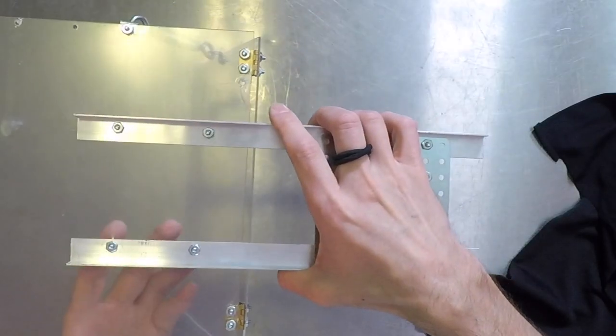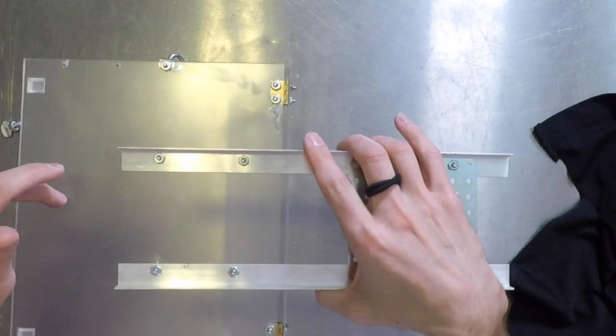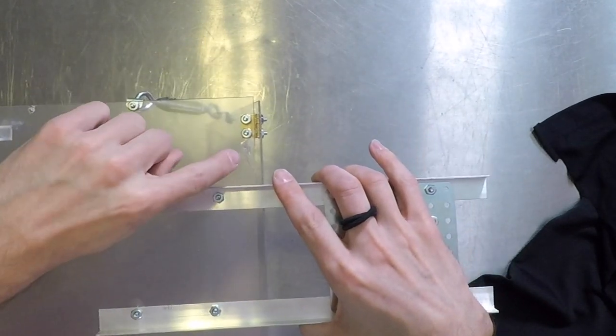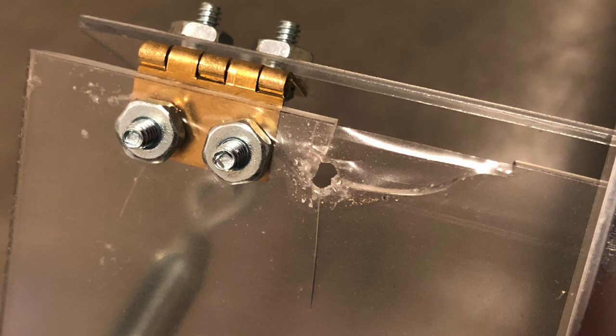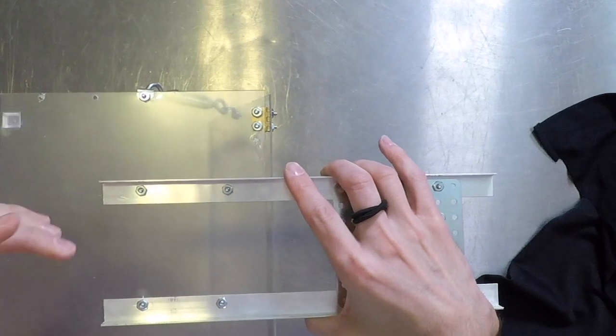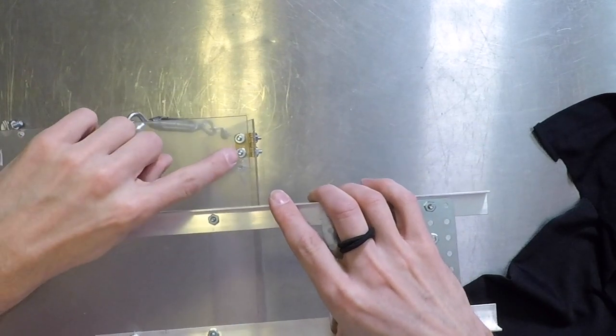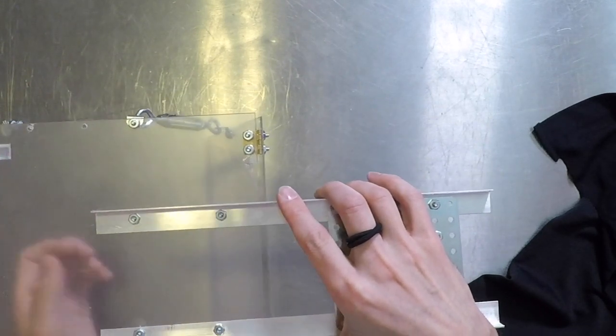One thing to note is this glass is, or this acrylic is a lot lighter than glass, but it is very fragile. So I cracked it here by starting off drilling a hole of the same size of screw that I wanted to put through here. And apparently that is too large. So you'll definitely want to start with a very, very small hole and kind of work your way up.